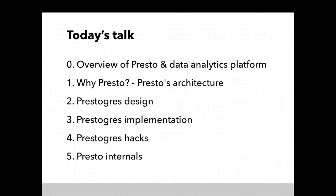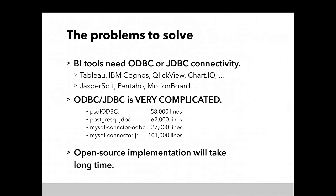So, I explained why I use Presto. Now I'll talk about Prestogres, which is ODBC connectivity to Presto. Again, the problem is ODBC and JDBC connectivity. Tableau, IBM Cognos, QlikView, and Chartio need ODBC. Java-based products need JDBC. And they are very complicated — the PostgreSQL ODBC client includes 58,000 lines in C, which is actually compact compared to MySQL's JDBC connector with 101,000 lines in Java.